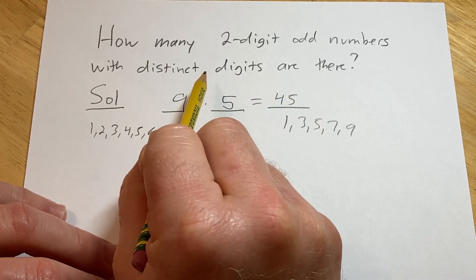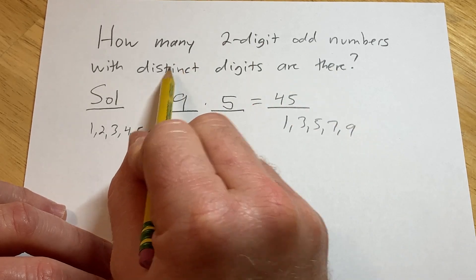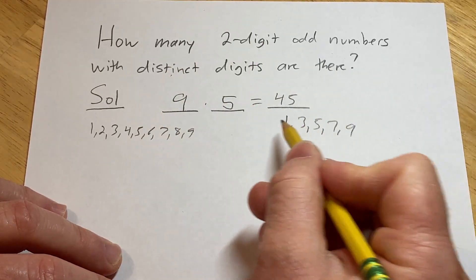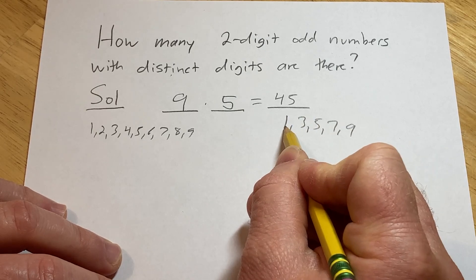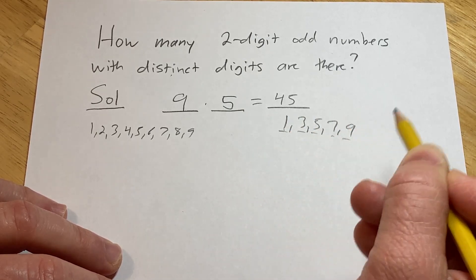Now let's think about how many two-digit odd numbers there are with digits that are not distinct. So if they're not distinct and it's odd, that means that if it's odd it has to end in one of these.